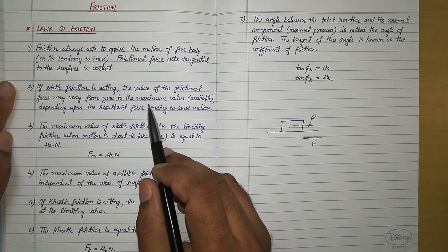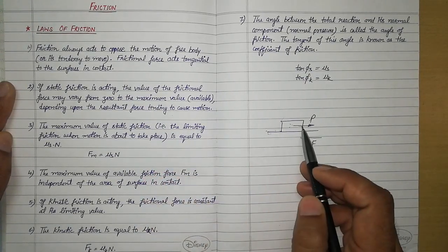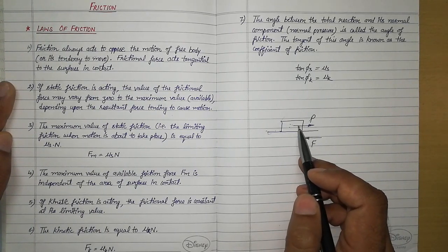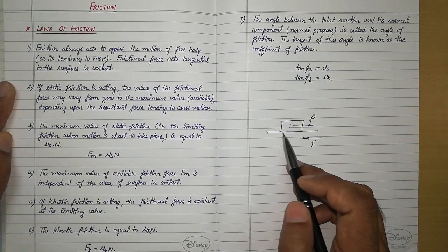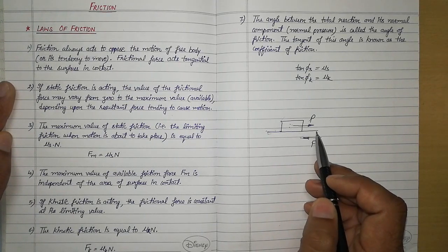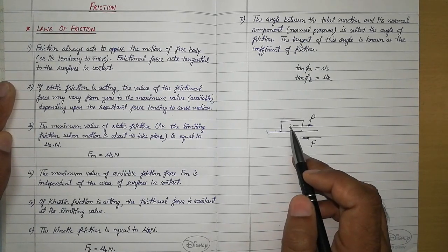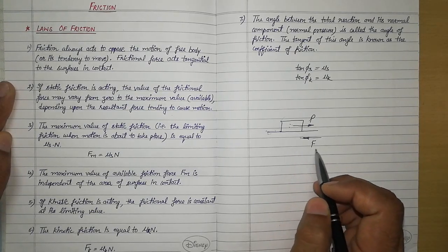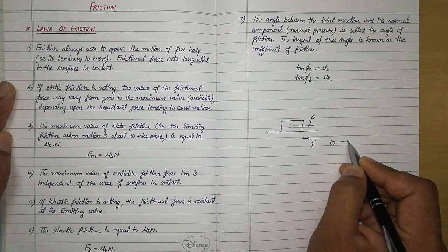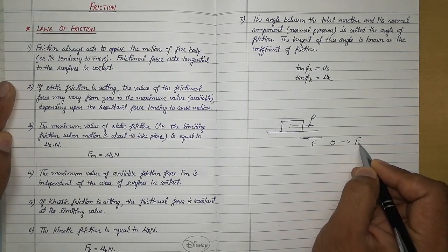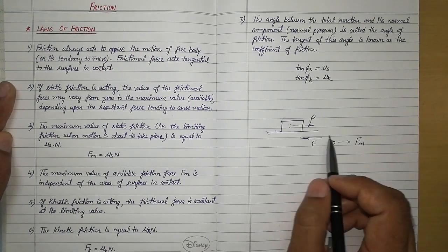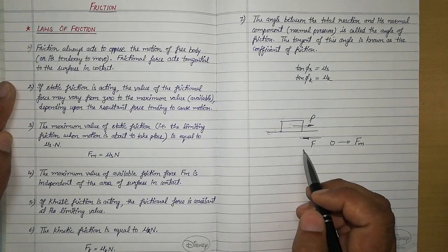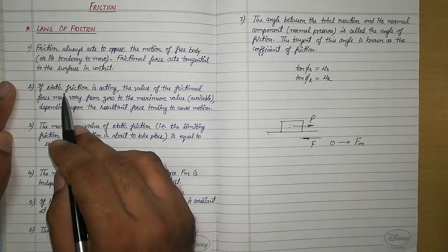When we apply a force on a body and there is a component of force along the surface on which the body is resting, the friction force will have a value varying from 0 to the maximum value. We call that maximum value limiting friction. As long as the body is not moving under the effect of this force, whatever friction develops is called static friction.